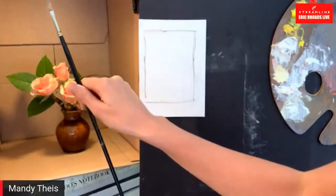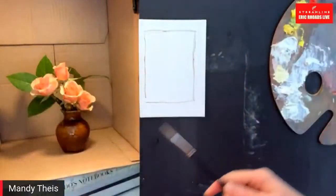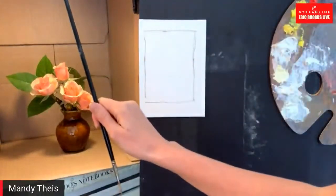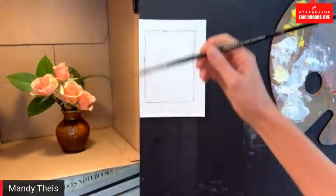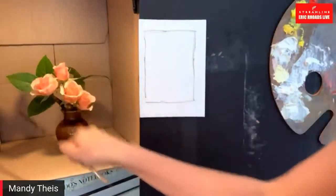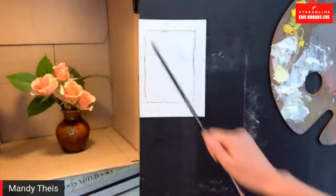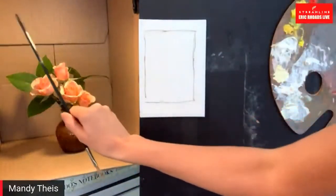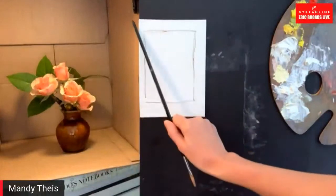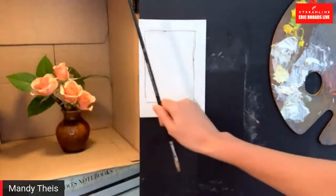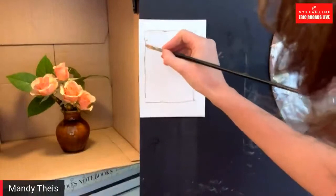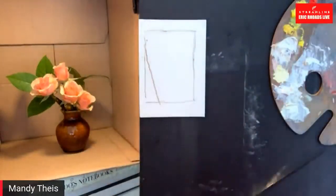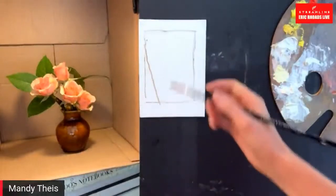We can get overwhelmed by visual information, so any tool we have for simplifying it is going to help us be better artists. When I'm trying to make a line on my page I ask myself: what is the angle of that line? I hold up my paintbrush and sight that angle over here, then translate it to the canvas by sighting the angle. That's actually pretty good — I'm happy with that.